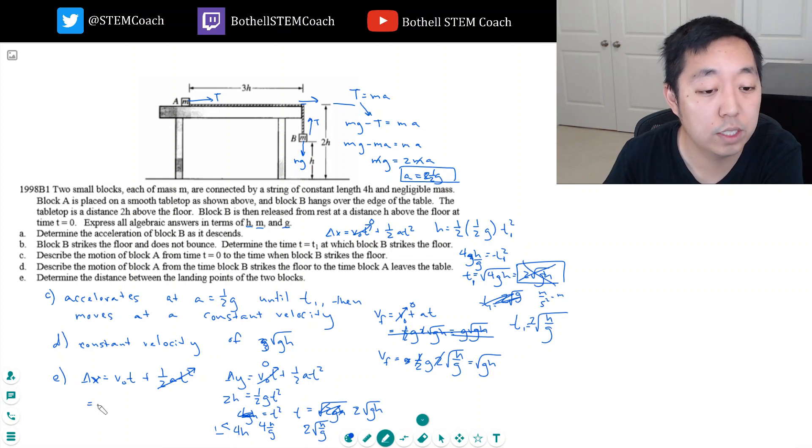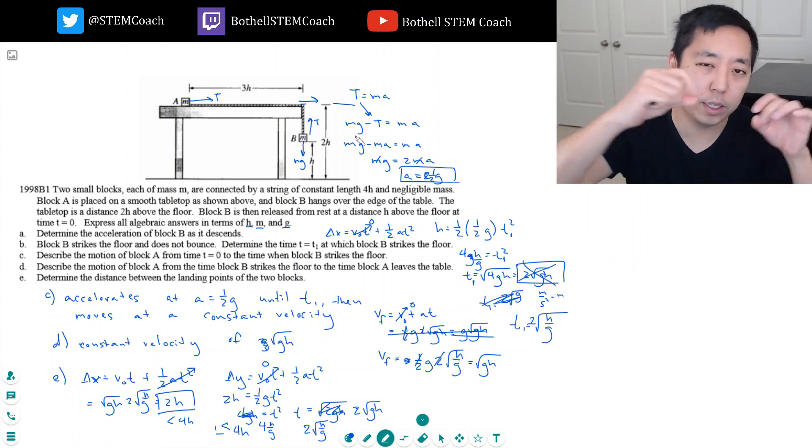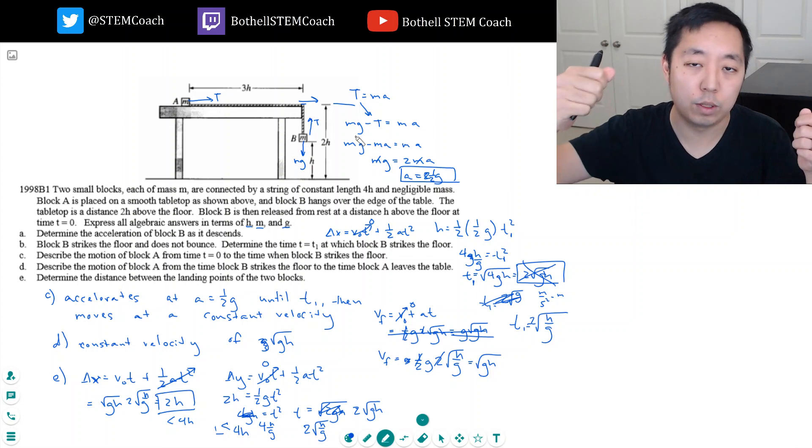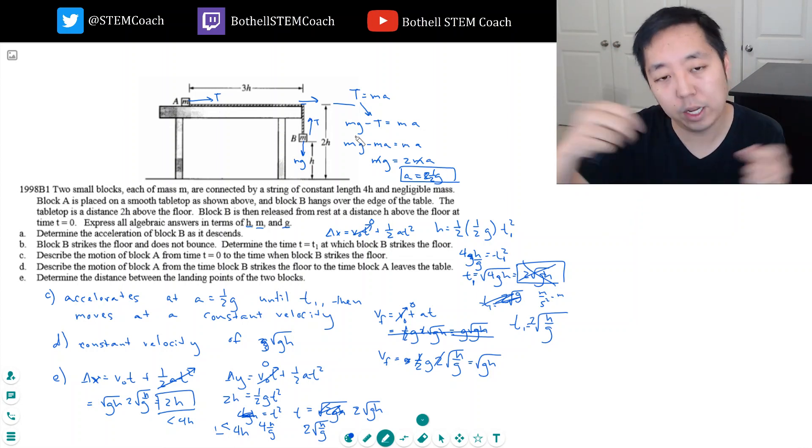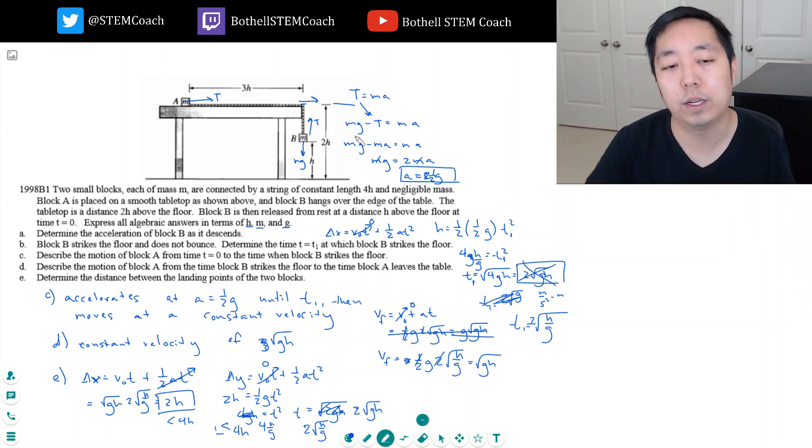His velocity is root GH. The time is 2 root H over G, so I get 2H. That's smaller than 4H. That means it will land, and I was worried that the string would be too long, like we would go further than the string would allow because the rope is tying them together. But because it's less than 4H, we know there's some slack in the rope. The rope's long enough to reach over there. Minor mistake there, but I hope you guys found that helpful.